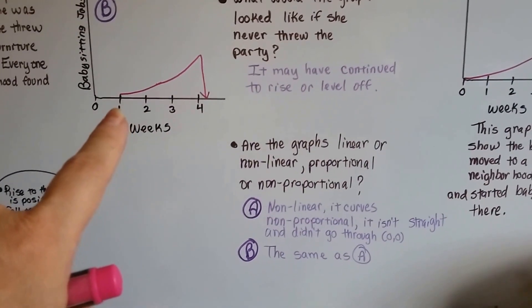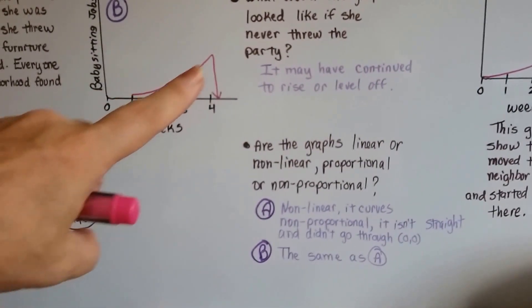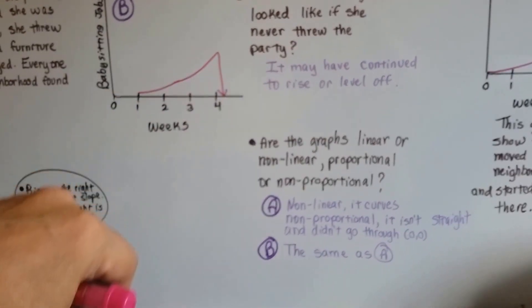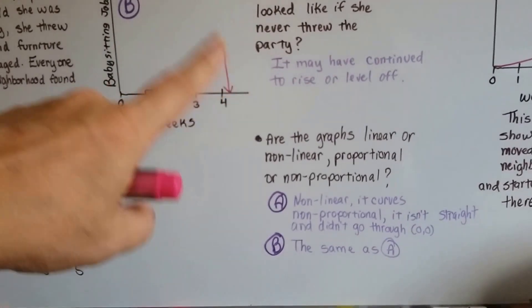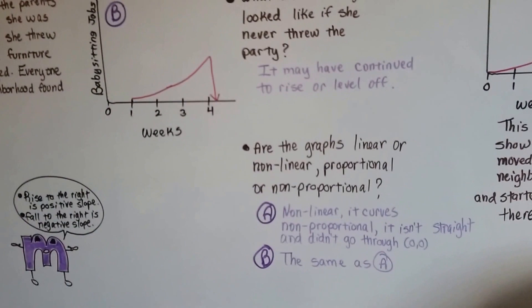And what about this one? Well, it's the same as a. It's nonlinear because it curved and then it dropped. And it's nonproportional because it's not straight and it didn't go through the origin 00. So it's nonlinear, nonproportional.